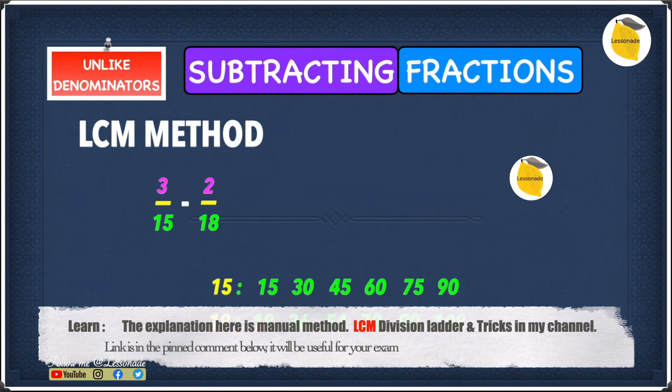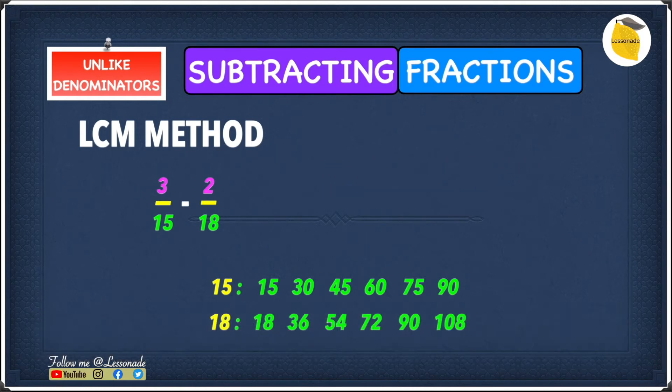So these are the multiples for both 15 and 18. The next thing we're going to do is to find the LCM out of these six multiples. For both 15 and 18, the only common multiple we can actually find between 15 and 18 is none other than 90.